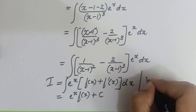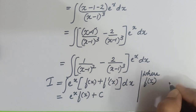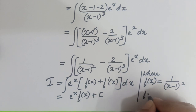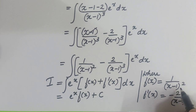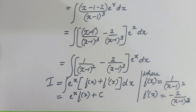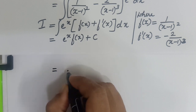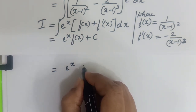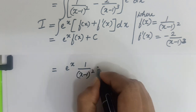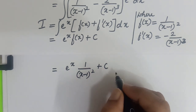Here, f(x) equals 1 by (x minus 1) whole square. When you differentiate this, you get minus 2 by (x minus 1) whole cube. To verify: rewrite as (x minus 1) to the power of minus 2, differentiate to get minus 2 times (x minus 1) to the power of minus 3, which gives minus 2 by (x minus 1) cube. So using the formula, I equals e raised to x times 1 by (x minus 1) whole square, plus C.